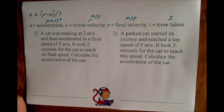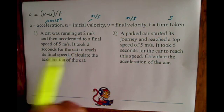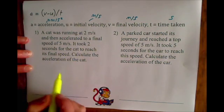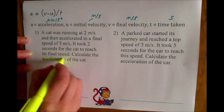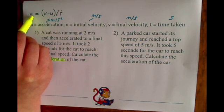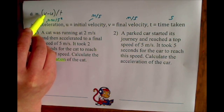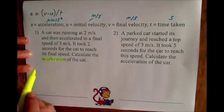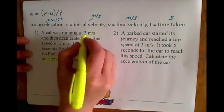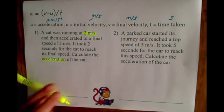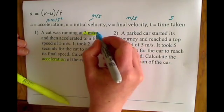All you need to do when you find wordy questions like this with a load of numbers is get your highlighter out in your exam, or underline the key points. We've been asked to calculate acceleration — the a — and to do that we'll need to find v, the final velocity, u, the initial velocity, and the time.